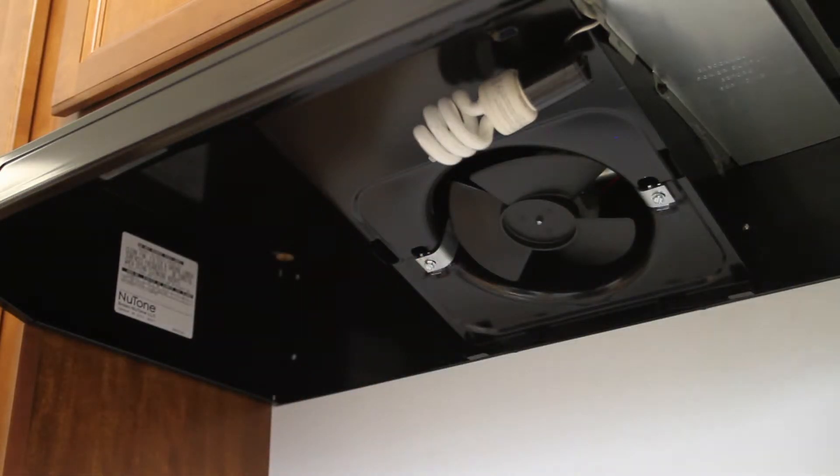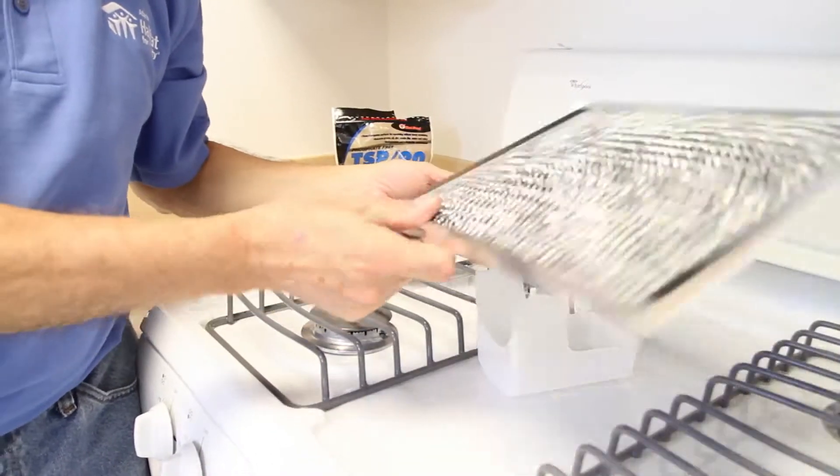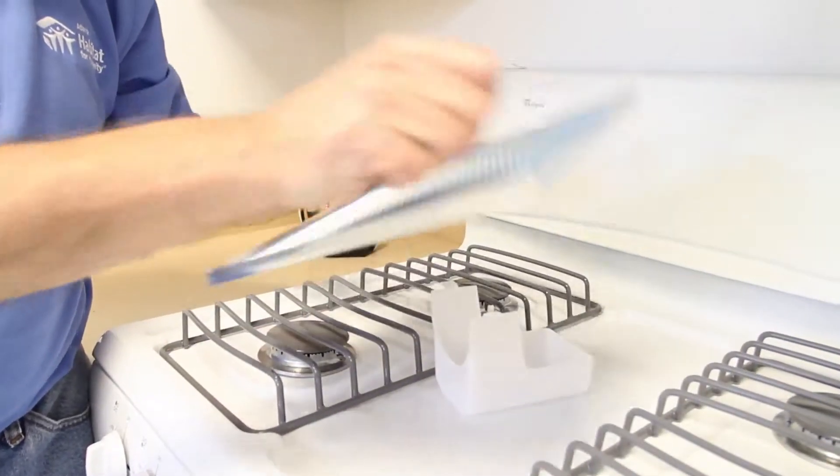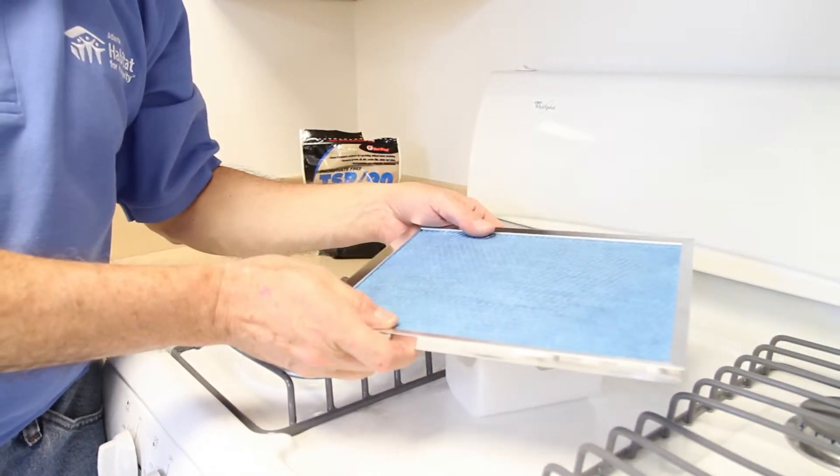This filter is going to get nasty dirty with grease. All you want to do with this is throw it in the sink, put some dishwashing detergent on there, let it soak, and then clean it out real good.